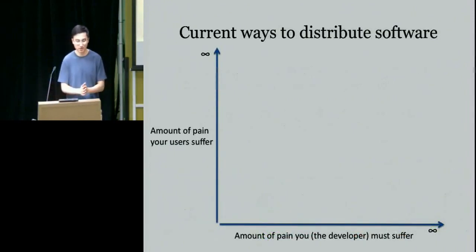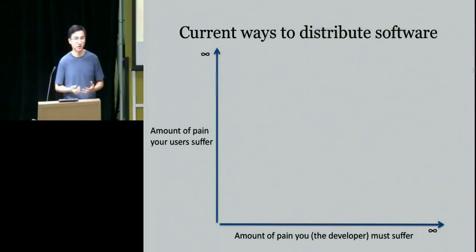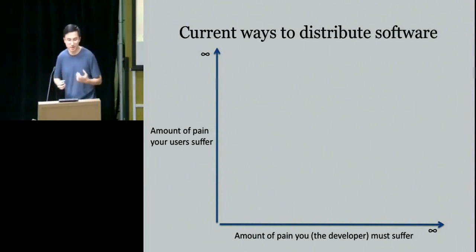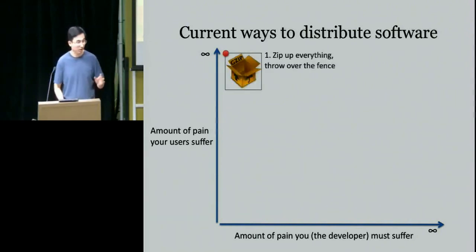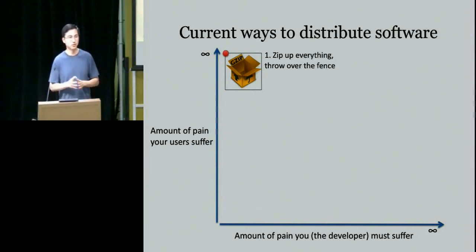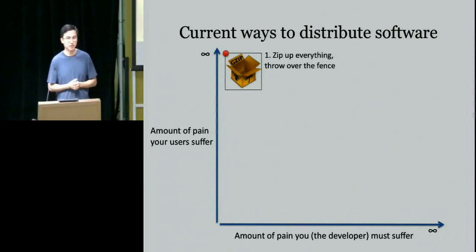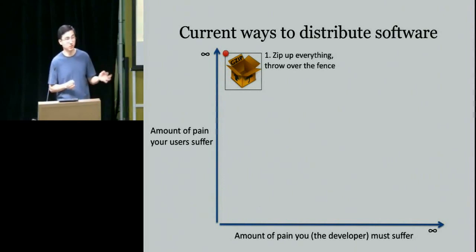There are two axes to consider when talking about how people currently distribute software: the horizontal axis is the amount of pain the developer must suffer when packaging, and the vertical axis is the amount of pain users must suffer. On one extreme, you just zip up everything and throw it over the fence — no pain for you, just zip up your code, scripts, or data files and upload or email them to colleagues. But this is potentially a lot of pain for users because they need the right versions of programs, plug-ins, and libraries installed before they can run your code.